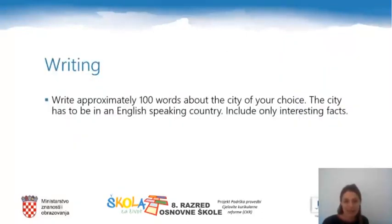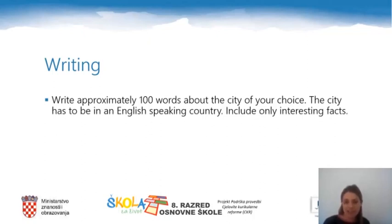I hope the lesson was interesting and I hope you learned something new. We have come to our last task, which you can do as homework. You have to write approximately 100 words about the city of your choice — the only condition is that it has to be in an English-speaking country. When writing about the city, do not write about data easily accessible on the internet, but include only fun and interesting facts about the city.